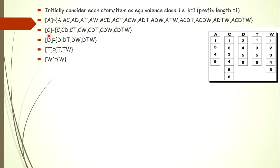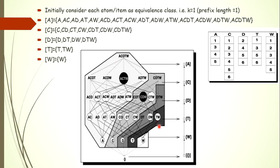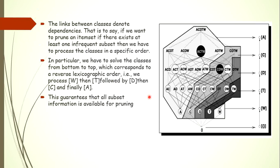For class C, it contains all itemsets with common prefix C. Similarly for D, P, and W. Pictorially, we have classes W, T, C, and A as sub-lattices. These partitions are called sub-lattices, and we process them in reverse lexicographic order to guarantee that all subset information is present before pruning.